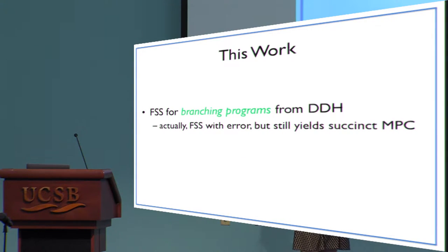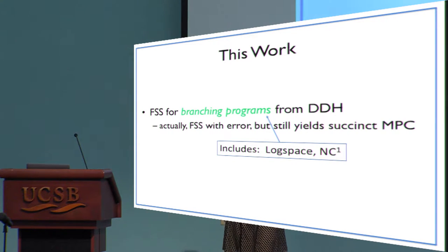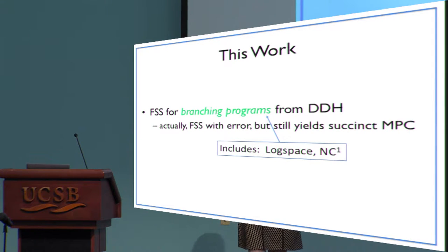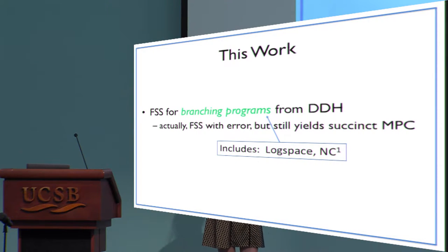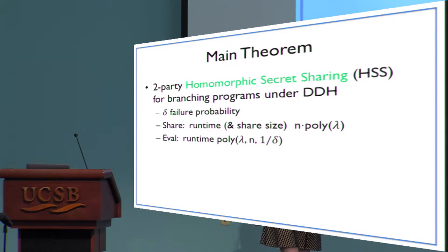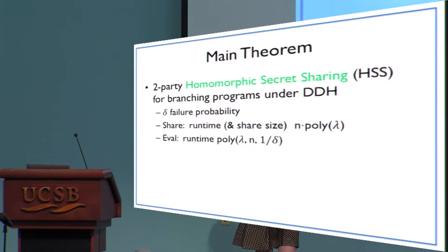We achieved this for the class of branching programs, which in particular includes NC1, log space, and a number of different things. What we achieve is not exactly the same as function secret sharing, in the sense that we have a small probability of error in the reconstruction procedure. But as it turns out, this is still enough — if you boost within the application — to give you, for example, succinct MPC. It will be a bit more convenient to talk about the dual notion of function secret sharing, which is that of homomorphic secret sharing.